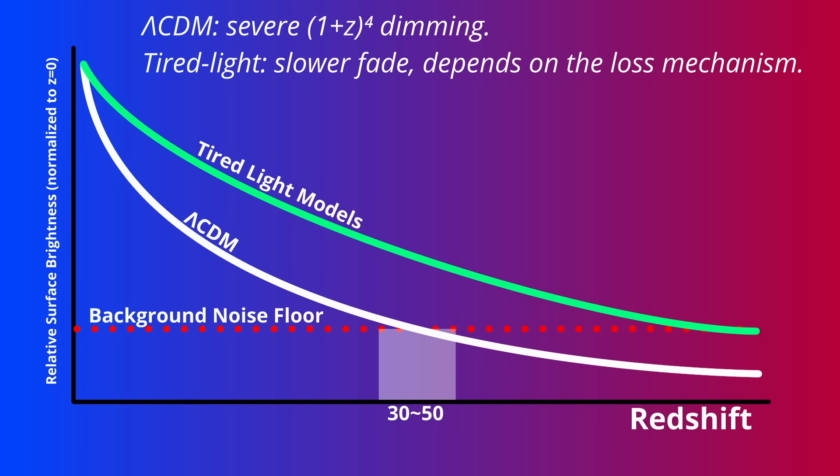Every telescope, no matter how powerful, eventually runs into the same wall: the background noise of the universe itself. But the position of that wall depends on the model. In the Big Bang framework, surface brightness fades with 1 plus z to the power of 4. So by a range of 30 to 50, galaxies should already be too faint to see. In tired light models, that dimming penalty doesn't exist. The wall lies much further out, limited only by noise.